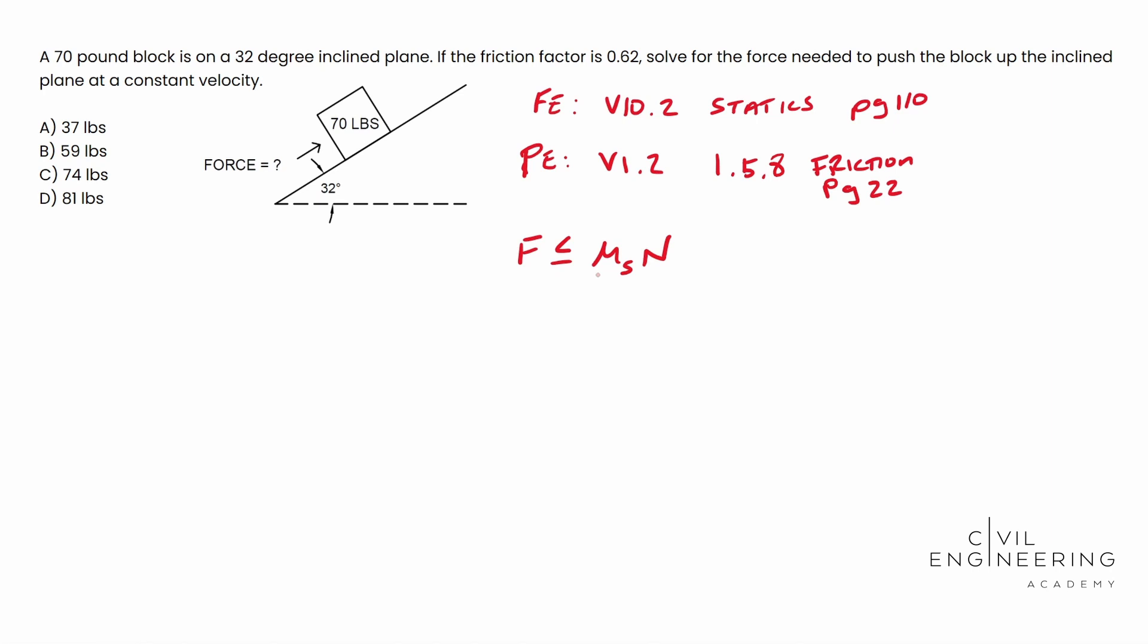If we're going to break this problem out, basically what we're looking at is we have this 70 pounds acting straight down because it's gravity. Then we have this normal force which acts perpendicular to the surface that the force is being applied. We have this applied force, and we have friction that's acting against our applied force.